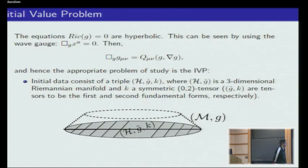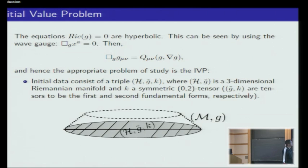To formulate the initial value problem, you need to know the space at some time, which means you have a section of your manifold that has to be a Riemannian manifold with a positive definite metric on that section. You also need to know something in the direction of time — the time derivative of the metric at this point in time, which is simply the second fundamental form. So what you need is a section of your manifold, a Riemannian metric on this section, and the second fundamental form describing the bending of this manifold into the big manifold.